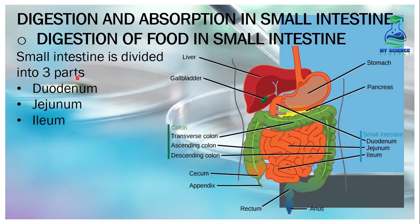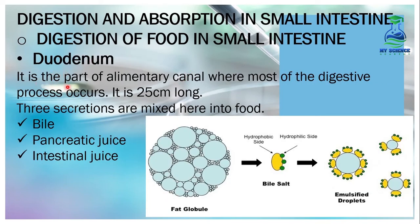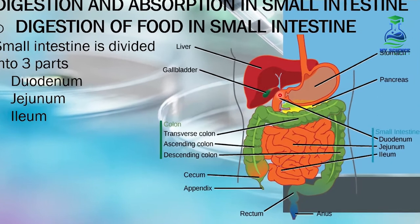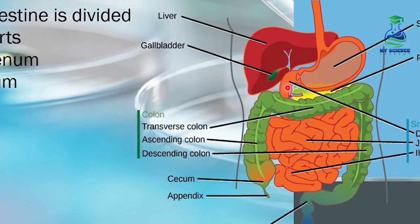The small intestine is divided into three parts: number one is the duodenum, number two is the jejunum, and number three is the ileum. In this diagram, we can observe these three parts of the small intestine. The duodenum is the part of the alimentary canal where most of the digestive process occurs. It is 25 cm long and connects with the pyloric sphincter, where the stomach connects with the small intestine.